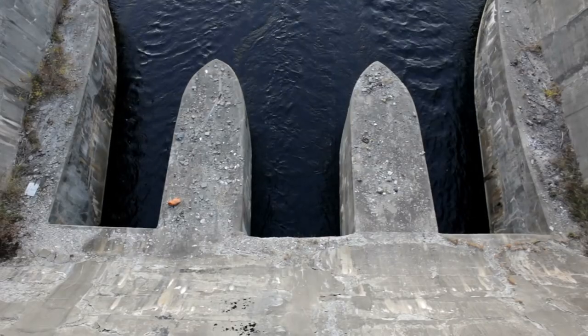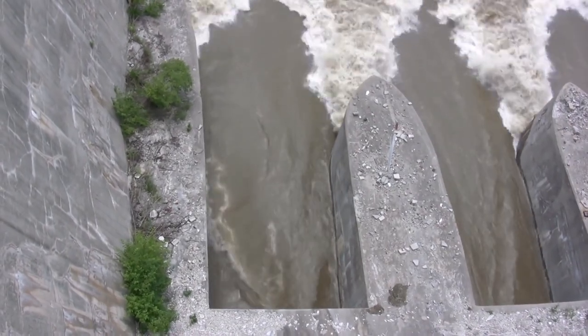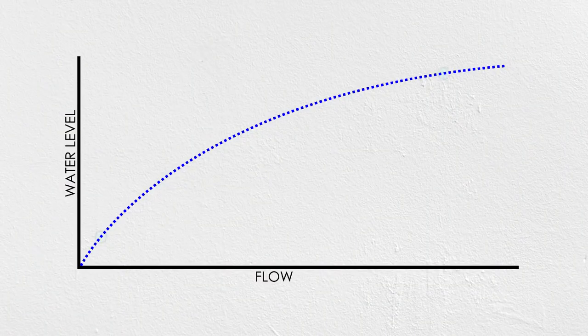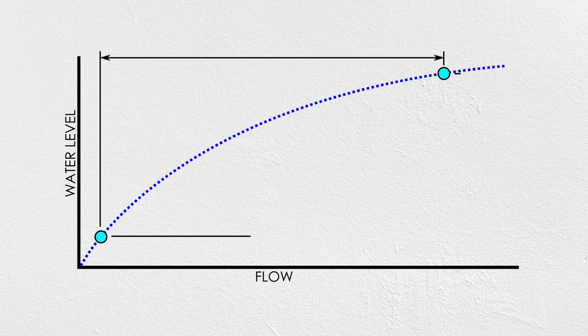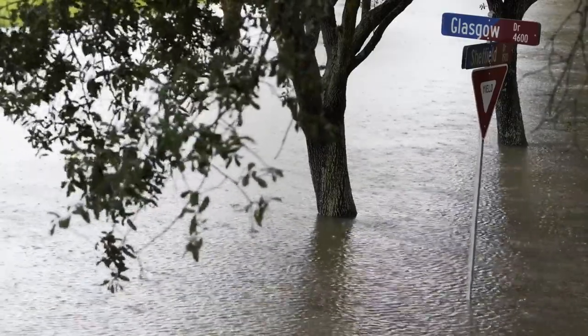In many cases, a weir is a passive structure, meaning that once it's installed, there's no way to change this rating curve, and that's not always ideal. Streams and rivers are subject to tremendous variability in flow rate. A hydraulic structure may normally flow a small amount, but in flooding conditions be asked to pass incredible volumes of water. With a passive structure and fixed rating curve, that variability in flow means tremendous variability in the water level upstream. During a flood, a weir may back up water badly enough to cause damage upstream.